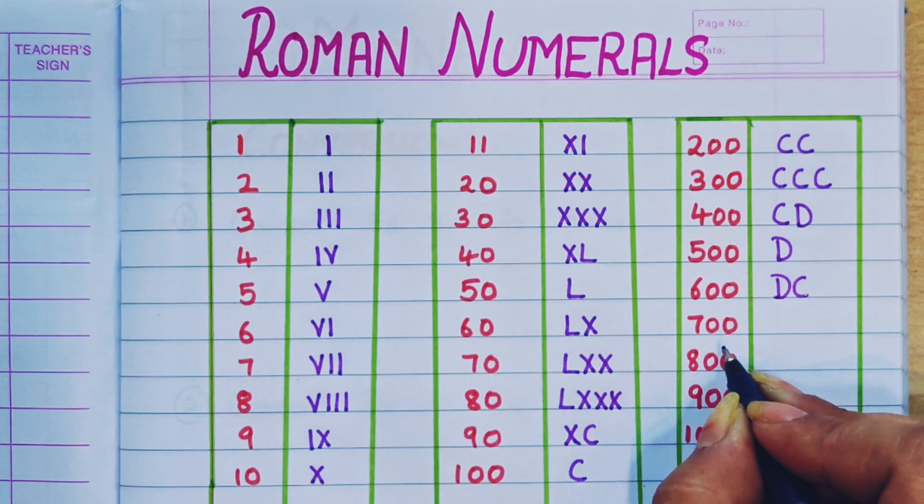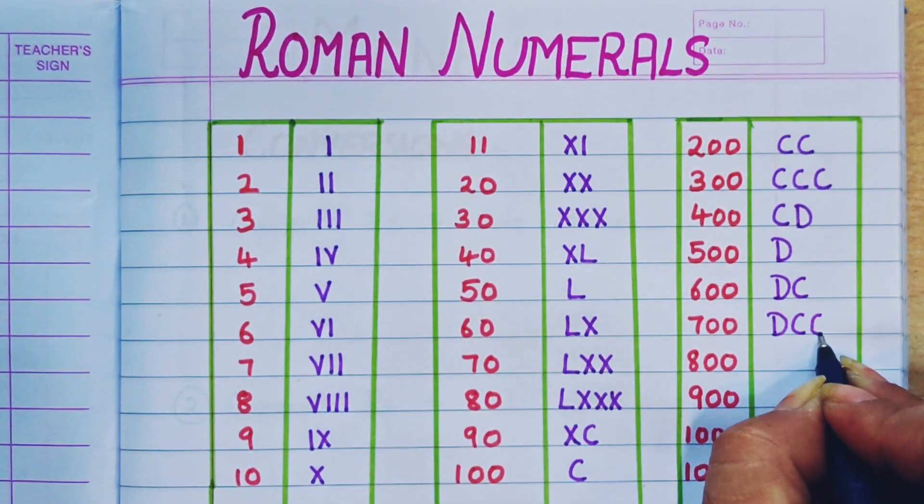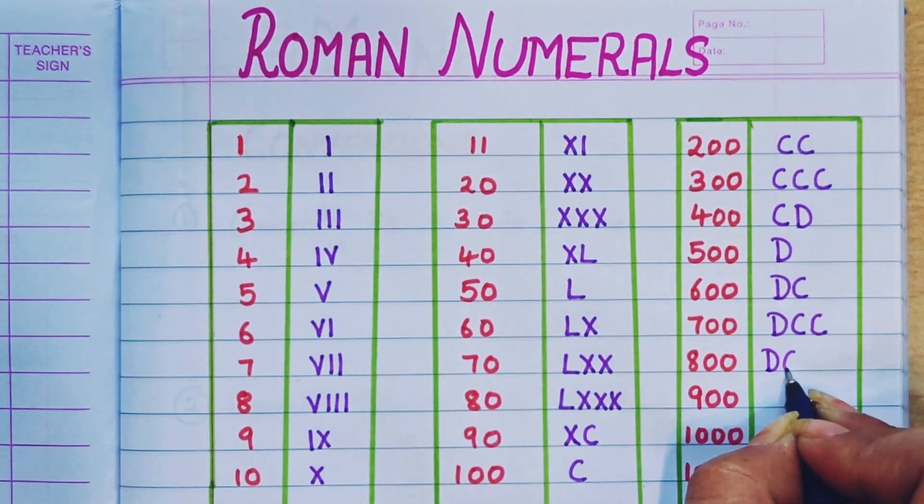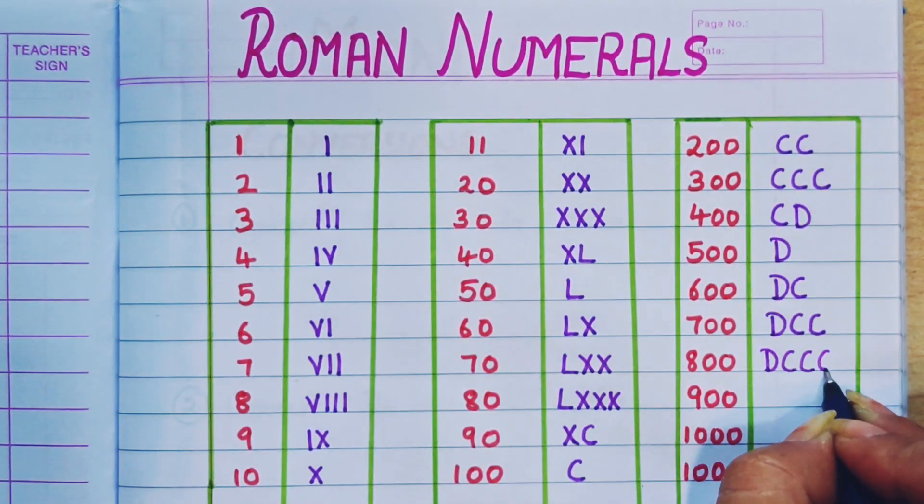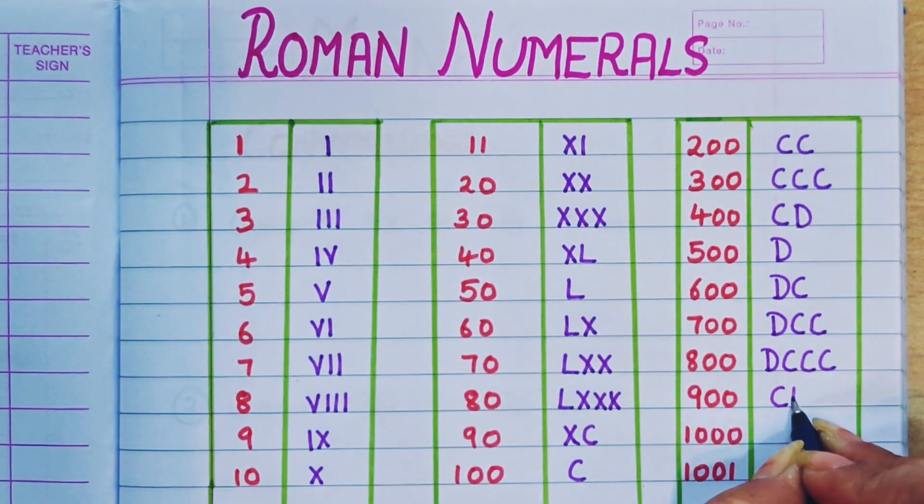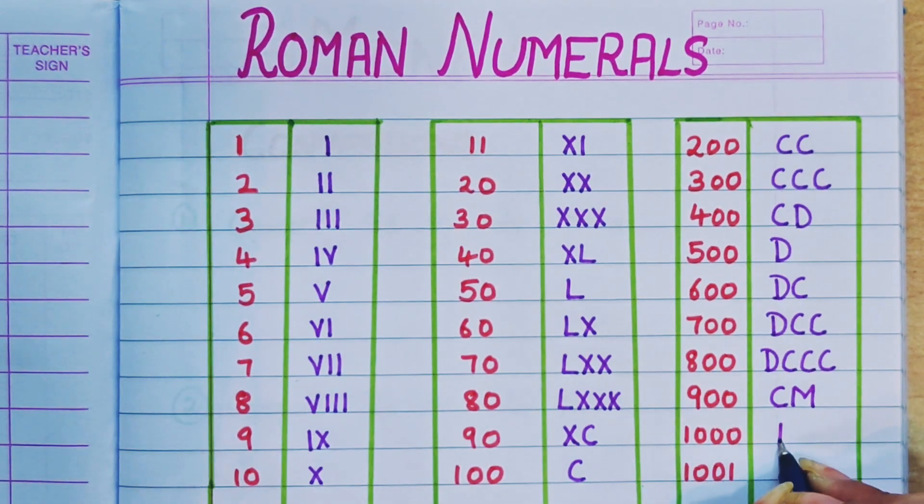600 D C, 700 D C C, 800 D C C C, 900 C M, 1000 M.